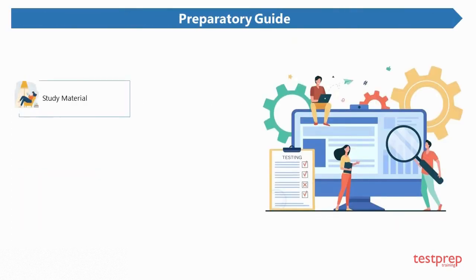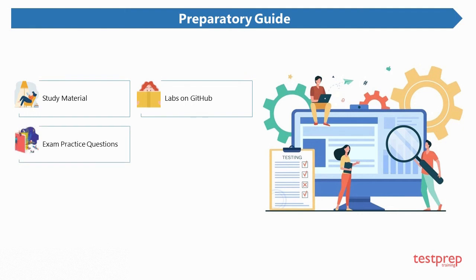Study material: study materials are one of the most important and fastest ways to achieve your goals. Labs on GitHub: if you are someone who learns quicker by practically doing tasks, then performing the questions on this site can help you link the material found on study sites. Exam practice questions: sites like Test Prep Training give you enough materials, question banks, and practice tests at affordable rates to help you prepare for the exam in every possible manner.